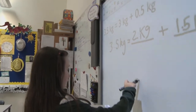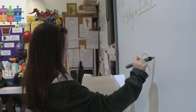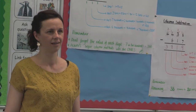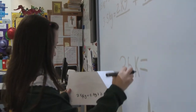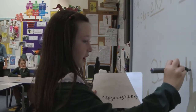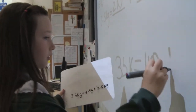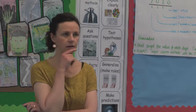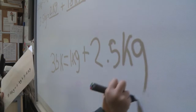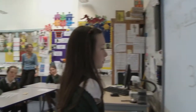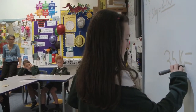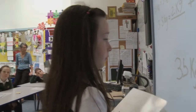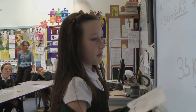Who can come and write that number sentence up on the board for me that you've just done? So, talk us through what you're doing. It's basically the same — you just have to swap the 1 and the 2 around. So, the 1 goes there and then the 2 goes... Thanks, Maisie. Can you read your number sentence out to us? 3.5 kilograms equals 1 kilogram plus 2.5 kilograms.